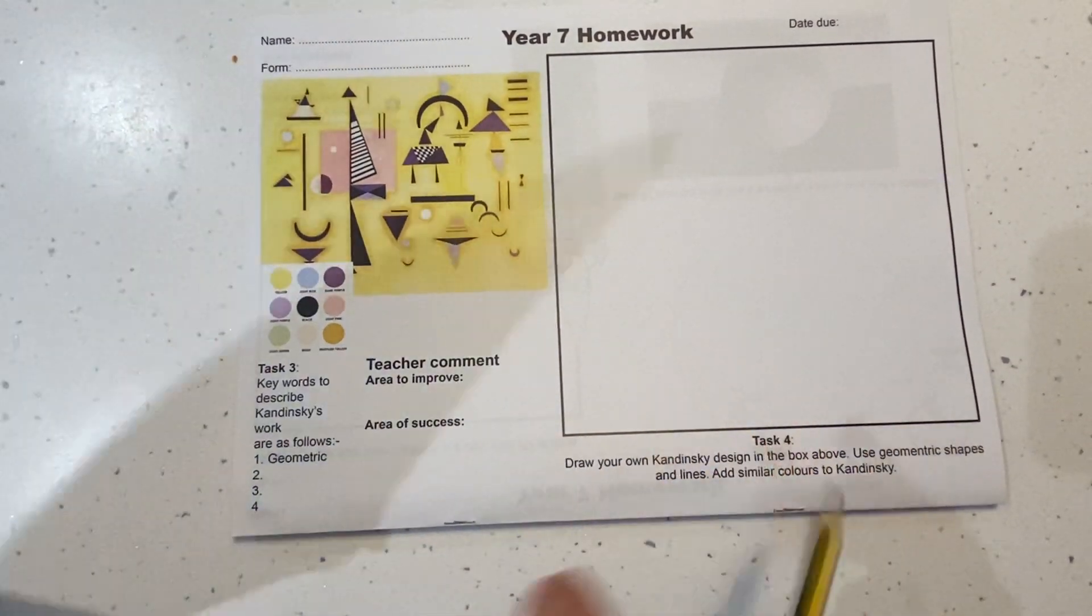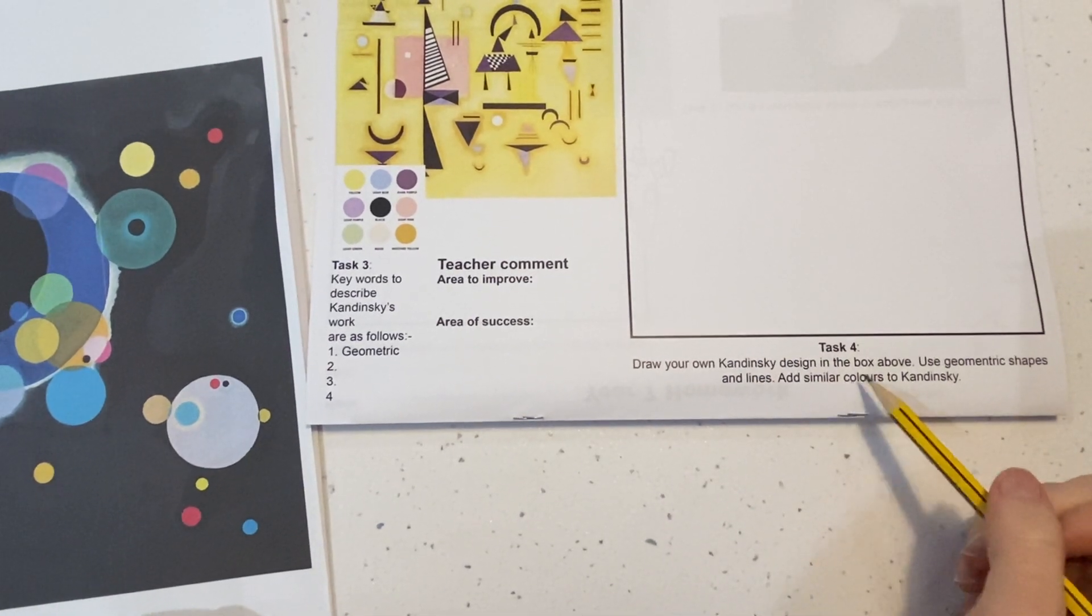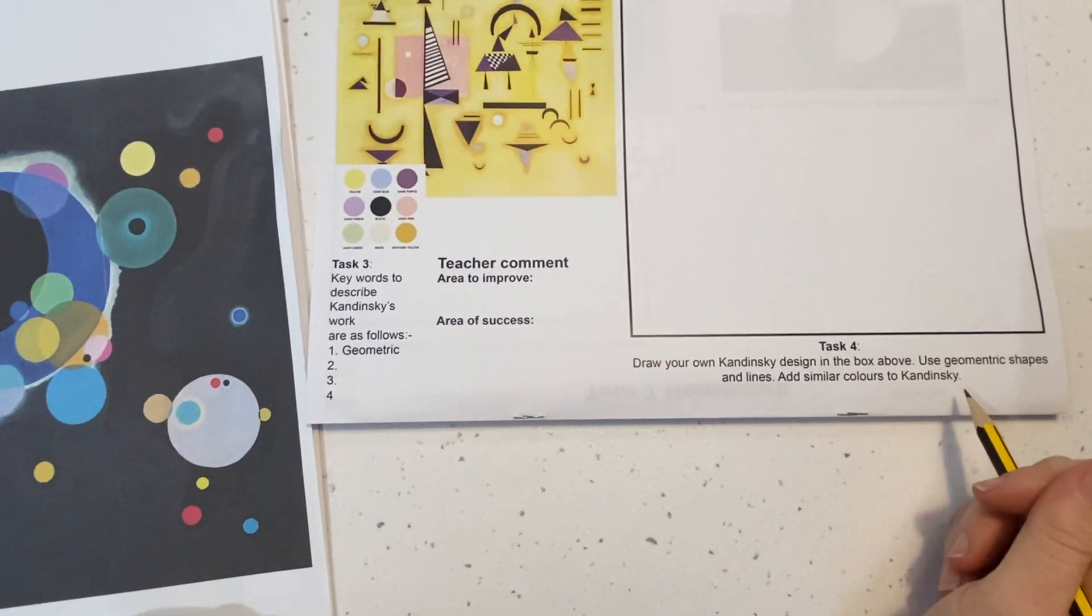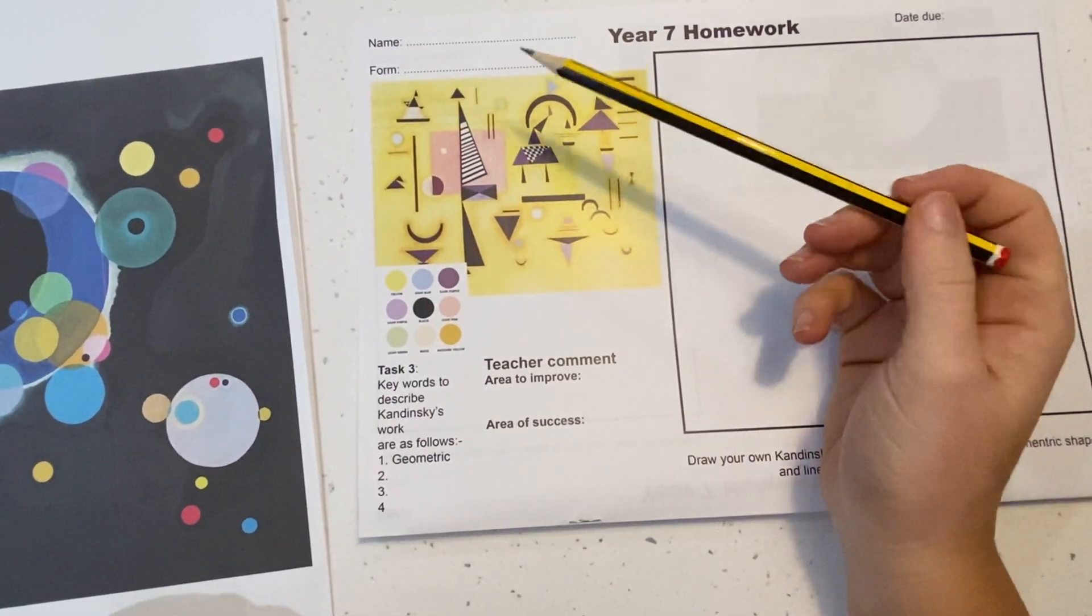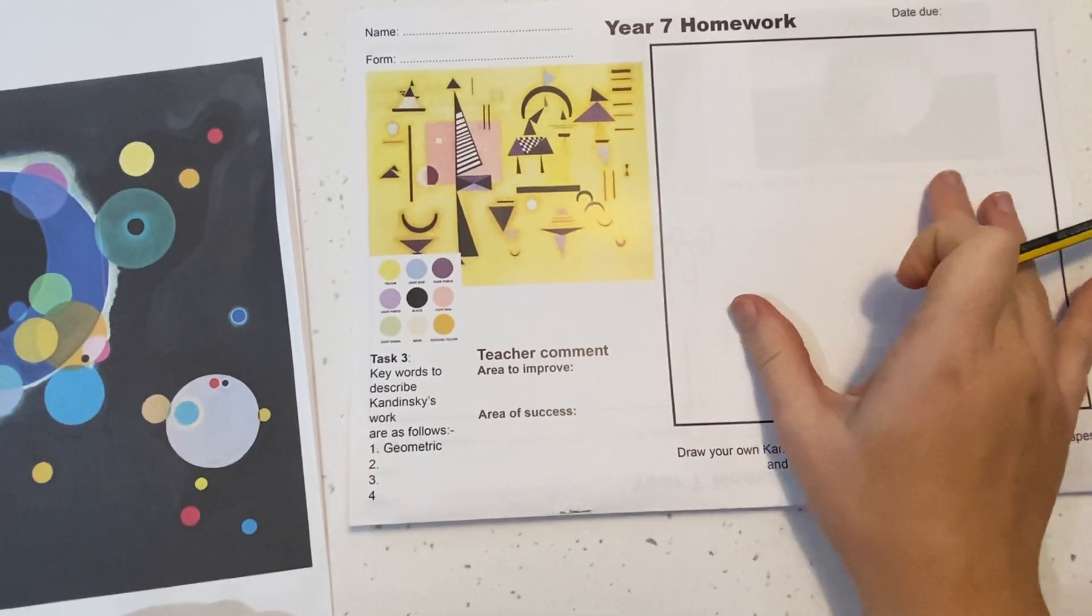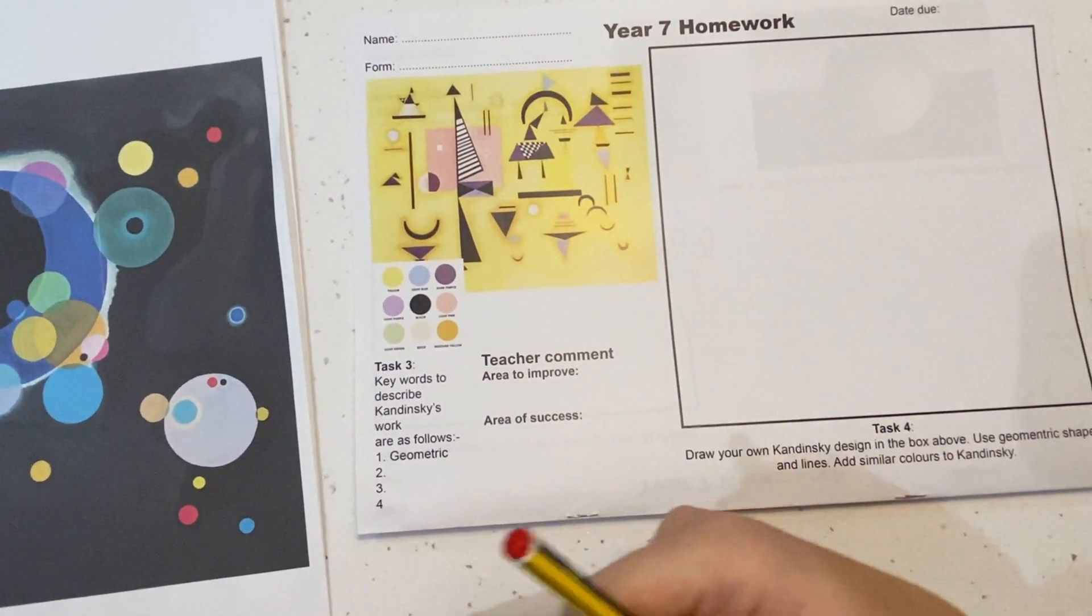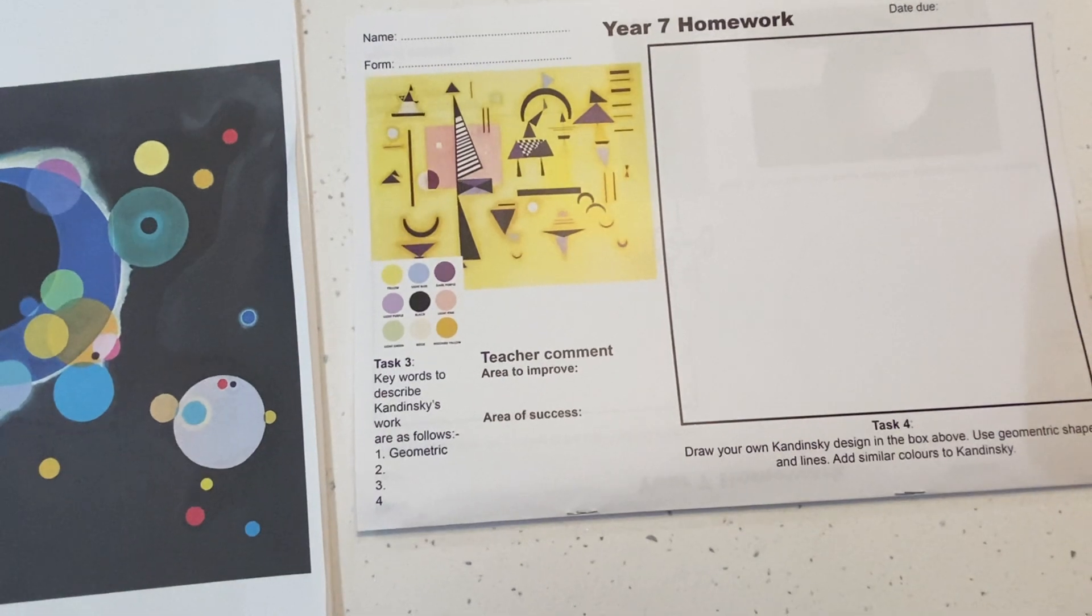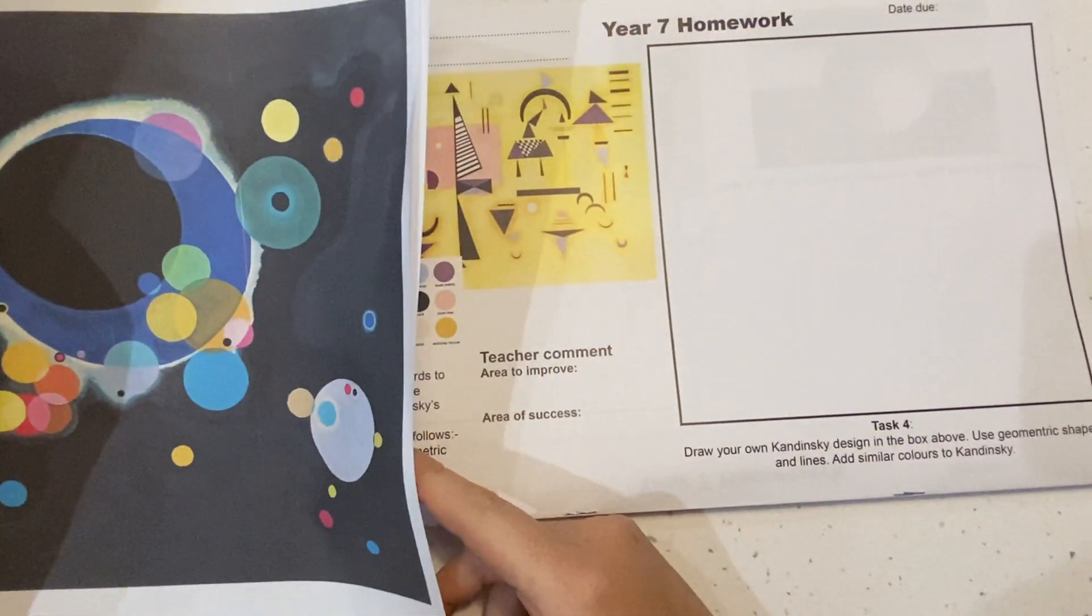For today's lesson, I want you to complete the second page which asks you to draw your own Kandinsky design in the box above, use geometric shapes and line, and use similar colors to Kandinsky. It has one image of Kandinsky's work in the top left. Now what I want you to do before you start completing this task is I want you to do a little bit of independent research. I want you to research Kandinsky and look at the variety of different styles of work that he has created.